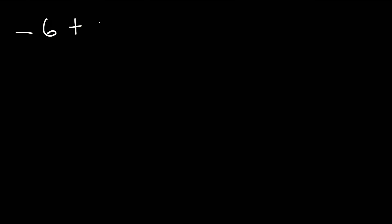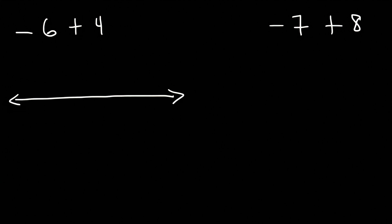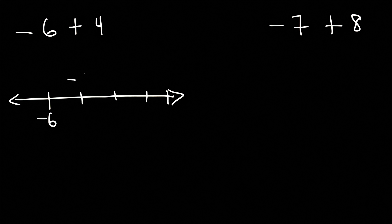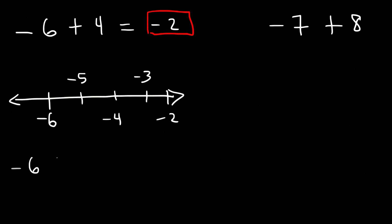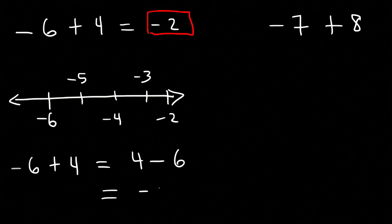Let's work on more examples: what is negative 6 plus 4, and what is negative 7 plus 8? Using the number line, starting at negative 6 and traveling four spaces to the right — negative 5, negative 4, negative 3, negative 2 — so negative 6 plus 4 is negative 2. You can also reverse the numbers: negative 6 plus 4 is the same as 4 minus 6, which is negative 2.